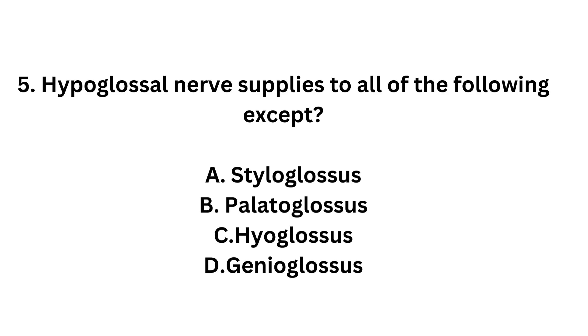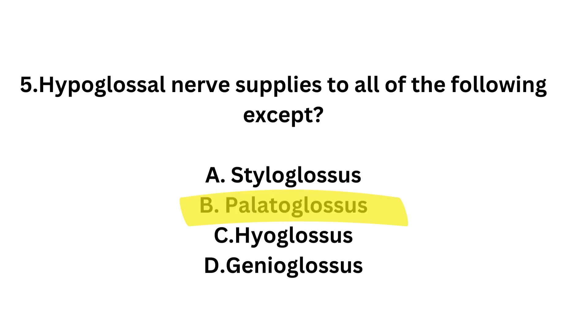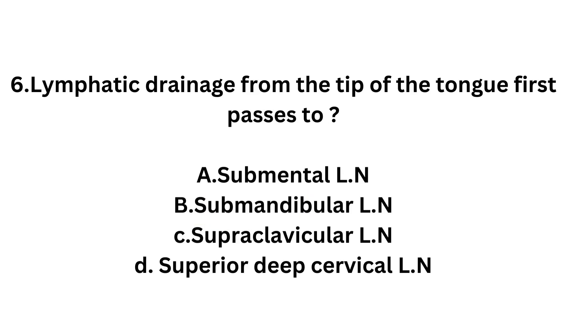Another question: hypoglossal nerve supplies all of the following muscles except - the answer is palatoglossus. We learned it's an exception. Palatoglossus is supplied by cranial nerve 11, accessory nerve, the cranial part.